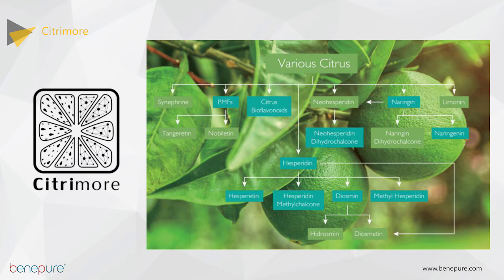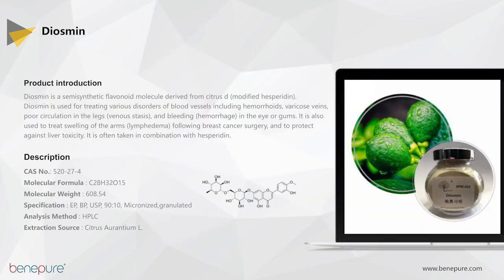There are different products from various citrus sources: hesperidin, diosmin, and citrus bioflavonoids, which are the most commonly used items for medicine and nutritional products. Diosmin is a type of plant bioflavonoid found mainly in citrus fruit. It is used for treating various disorders of blood vessels including hemorrhoids, varicose veins, poor circulation in the leg, and bleeding in the eye or gums. It is also used to treat swelling of the arms following breast cancer surgery and to protect against liver toxicity.